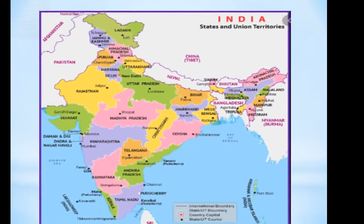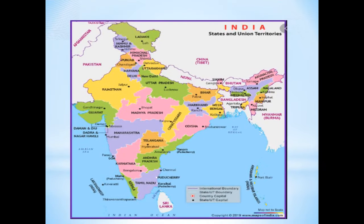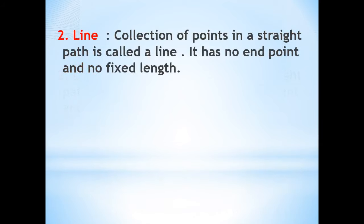Now let us learn about line. A collection of points in a straight path is called a line. A line has no endpoint and no fixed length. Here we are having the line AB. This line AB has no beginning and no ending.